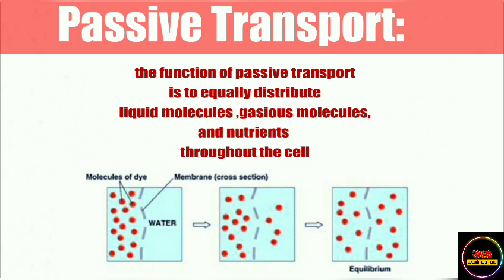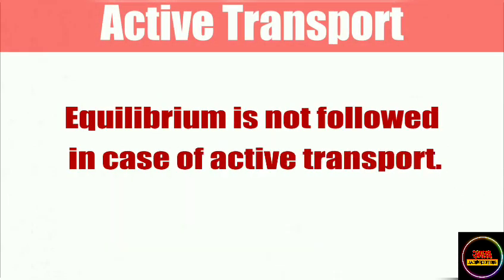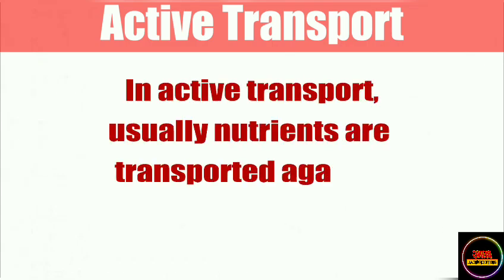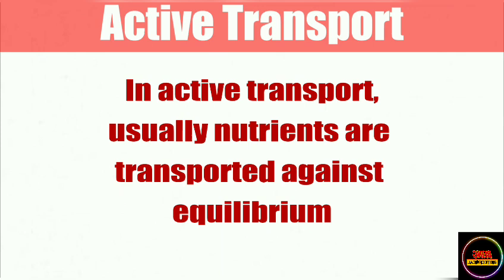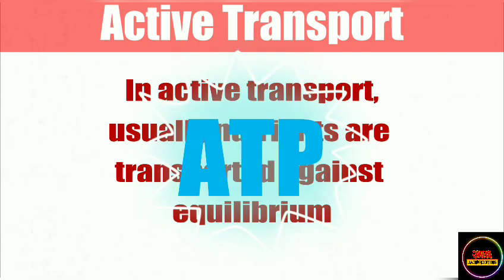Once equilibrium is reached, the process of passive transport stops. Active transport, on the other hand, does not follow equilibrium. In active transport, nutrients are transported against equilibrium, which is why it is an energy-consuming process — transporting molecules after equilibrium requires energy in the form of ATP to work against the concentration gradient.